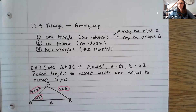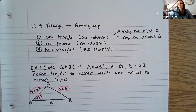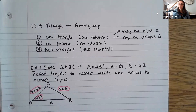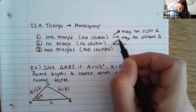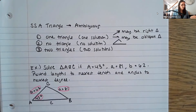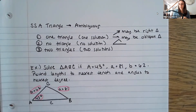These triangles are tricky because different things can happen when solving them. First, it could solve perfectly fine — you get one complete triangle, either right or oblique. Second, you could get no triangle at all, meaning the angles and lengths don't work out and one side is too short. Third, you could actually get two answers — two separate triangles that both work for the same given information.